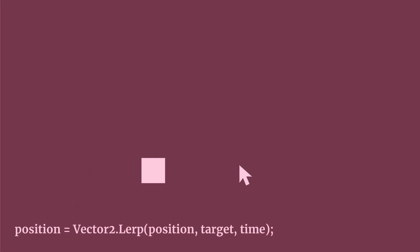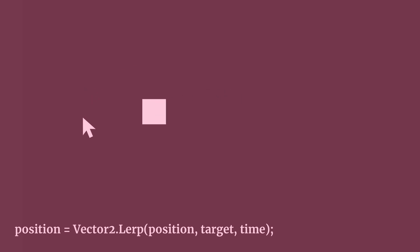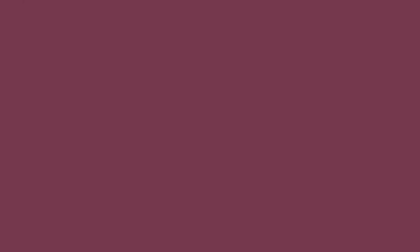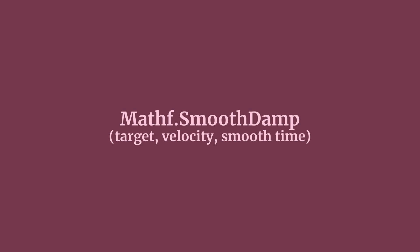However, while this method does ease a value towards a target, it can be difficult to control, as the rate of change isn't really scaled by anything, meaning that while it's not the wrong way, there may be a better way depending on what you're trying to do. For example, SmoothDamp can be used to smoothly move a value towards a dynamic target over an approximate amount of time, where the beginning and end of the value's transition will be slowed, easing it in and out.